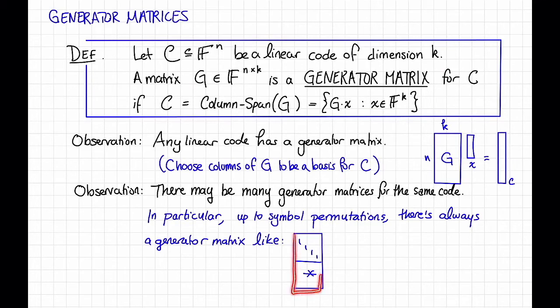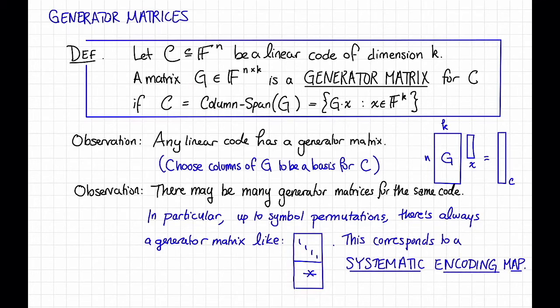A generator matrix that looks like this is nice because it corresponds to what's called a systematic encoding. We say that an encoding map is systematic if the k bits of the message occur as the first k bits in the codeword. And you can see that if your generator matrix looks like this, and you multiply it by some message, then the codeword that you're going to get out, because there's the identity sitting right here, is going to have the message as the first k bits of the codeword.